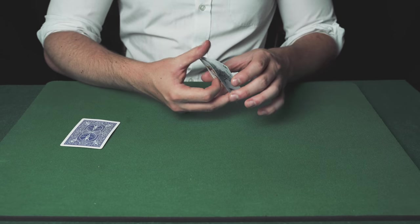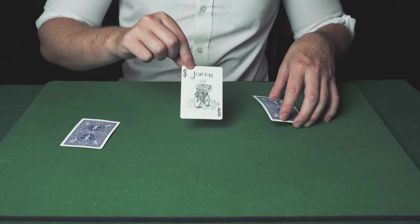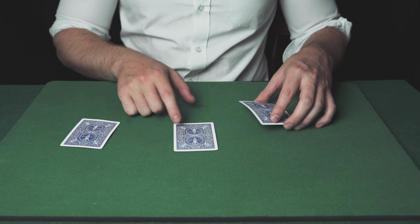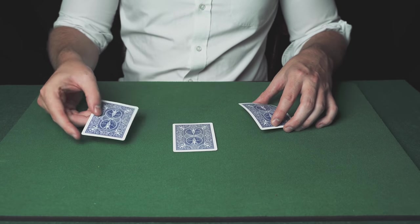For the third time, perform the sleight you learned earlier and do a false throw. The spectator will think that the queen is on the table when in reality it's a joker. Move what they think is the queen to the side, then put the other joker under the queen, which is actually in your hand.